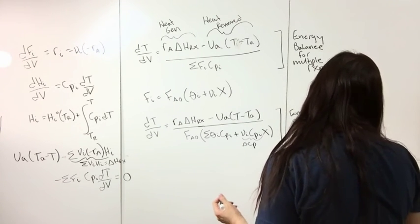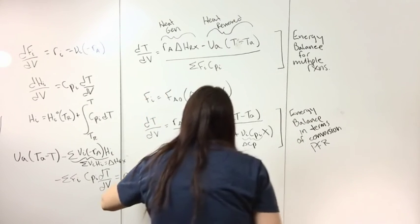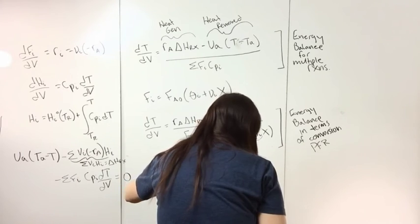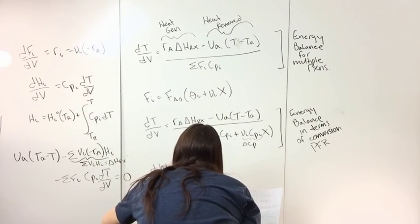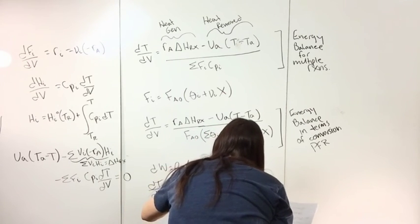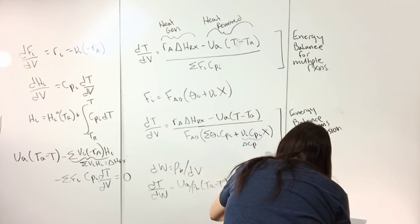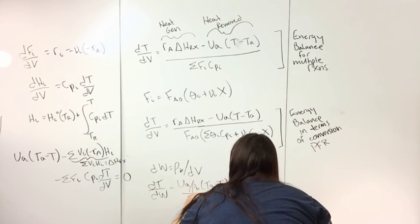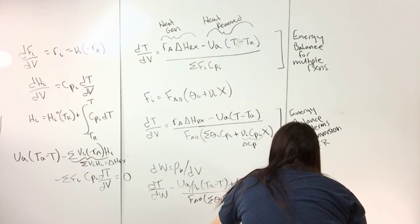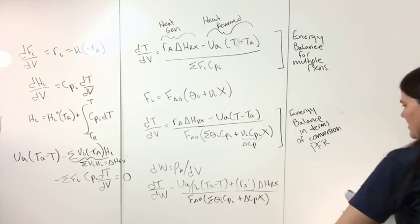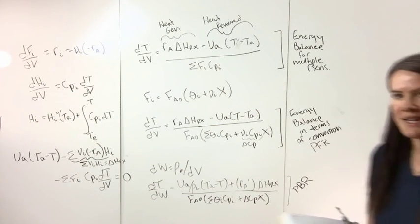For a PBR, we put this in terms of dW using dW equals rho_B dV. So dT/dW equals (U A / rho_B)(T_A minus T) plus r_A prime times delta H_rxn, all divided by F_A0 times the sum of (theta_I C_P_I plus delta C_P times X). This is the energy balance in terms of conversion for a PBR — equation 3A on the table.